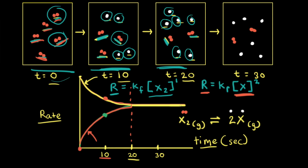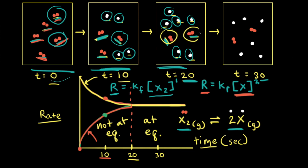At time equals 20 seconds, the rate of the forward reaction becomes equal to the rate of the reverse reaction, and the rates also become constant at this point. When the forward rate equals the reverse rate, the reaction has reached equilibrium — shown by the dotted line on our graph. To the right of the dotted line the reaction is at equilibrium; to the left it is not. Since both rates are equal, X2 is turning into 2X at the same rate that 2X turns back into X2, so the concentrations of X2 and X remain constant, as confirmed by the particulate diagrams at t=20s and t=30s, which both show two X2 particles and six X particles.